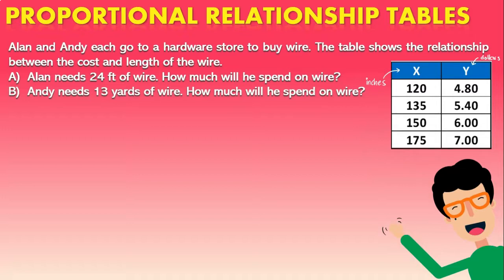Again we have our table. Our table is x which is in inches and y which is going to be the cost in dollars. Now guys you have to remember that it is very important that we have to guarantee that the table indeed has a proportional relationship. In order to do that, we have to remember that in order to find the value of k or the constant of proportionality, we have to divide the value of y divided by x.